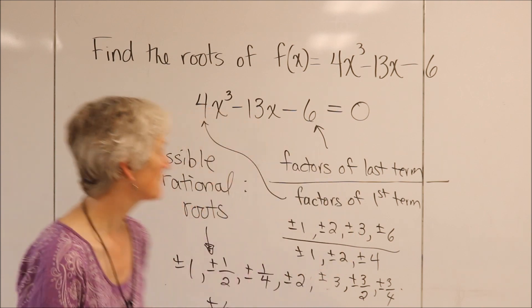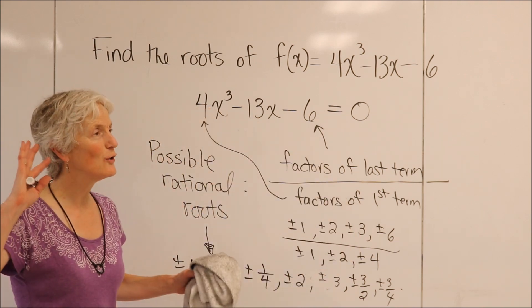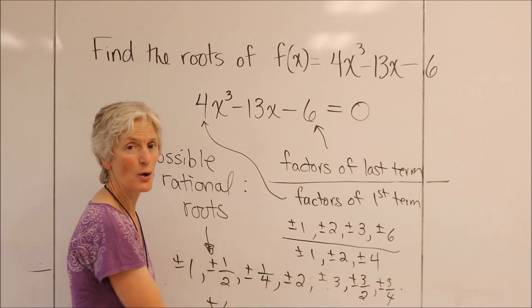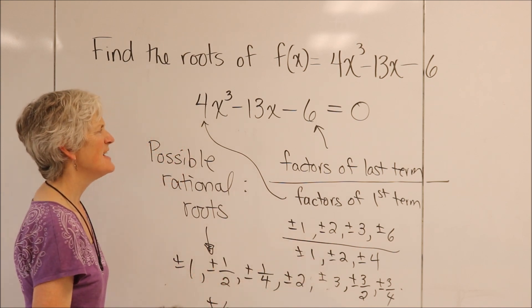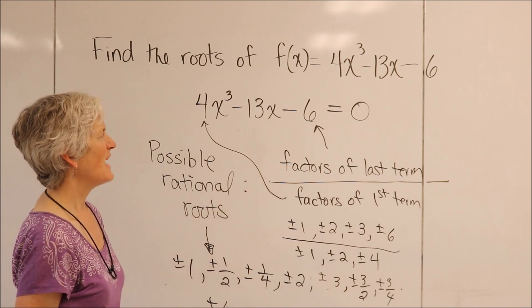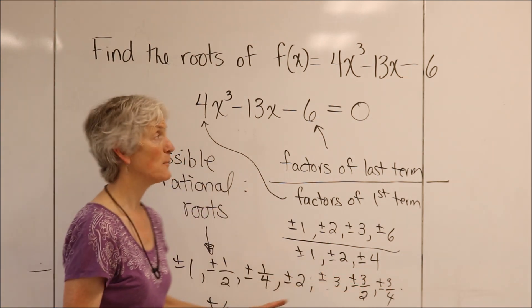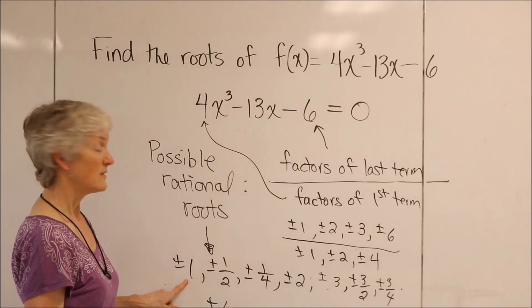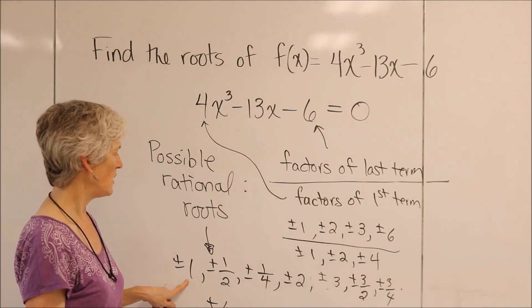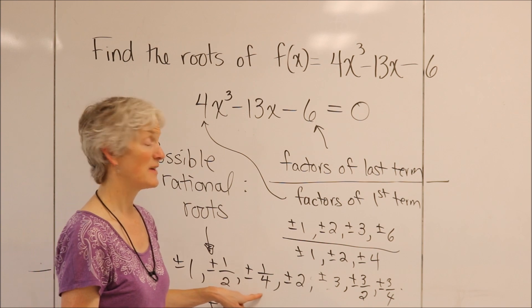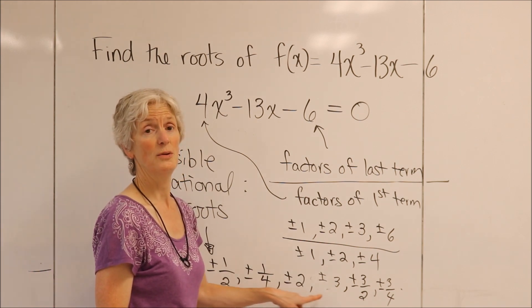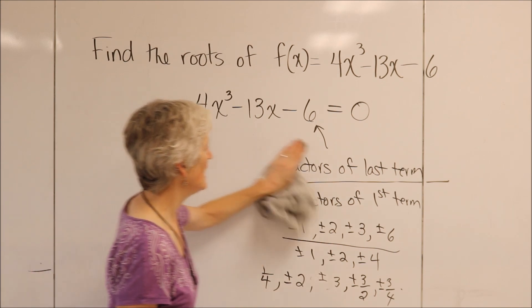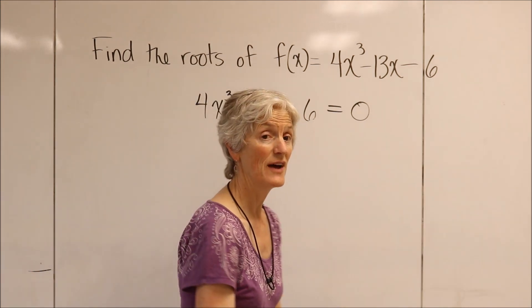I always start with the nice ones: plus or minus 1. See if it works. I'm going to avoid fractions for a while. Maybe I'll try plus or minus 2, plus or minus 3. What we're going to do is put all of these possible roots in and see if I get a winner — in other words, if I get 0.